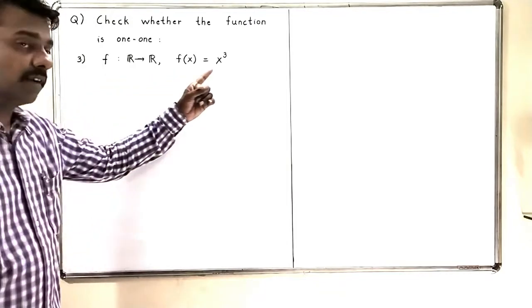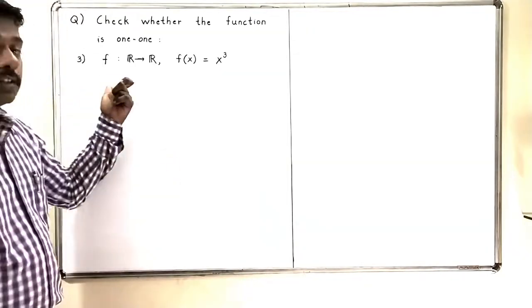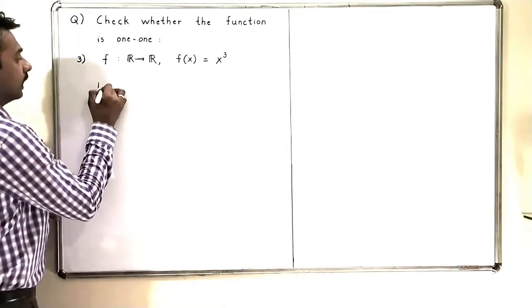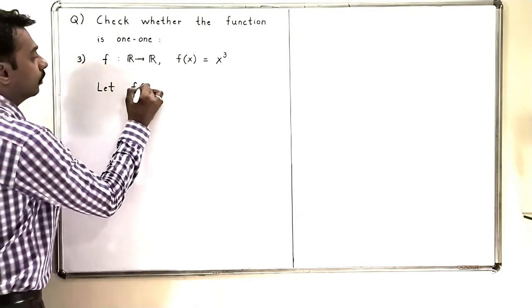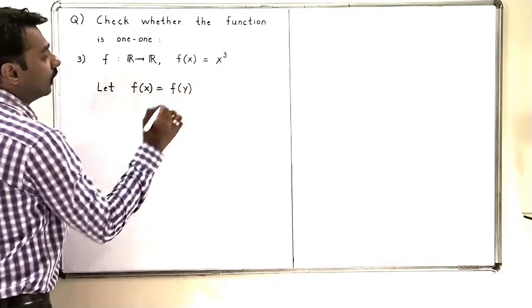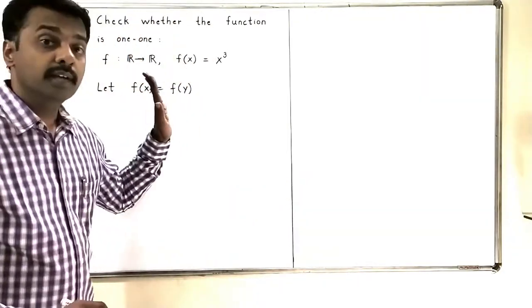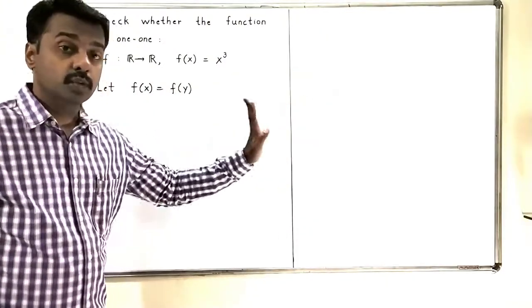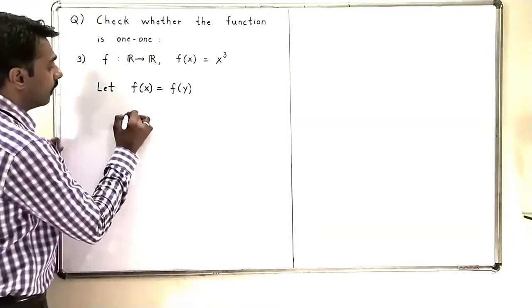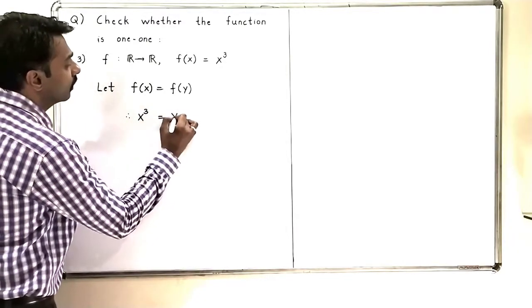Now let us check the third function whether it is one-to-one or not. I will assume f(x) = f(y) and try to conclude that x = y. This will not be as easy as the previous two problems. When I say f(x) = f(y), I get x³ = y³.